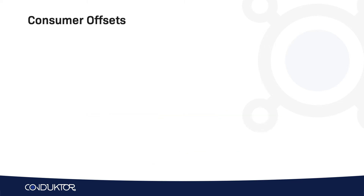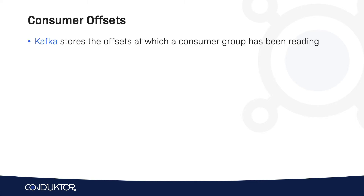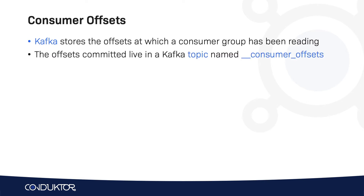When consumers start reading in a group we need to introduce the concept of consumer offsets. Kafka stores how far a consumer group has been reading, and this is called the consumer offsets. These committed offsets live in an internal Kafka topic named __consumer_offsets (starting with two underscores).